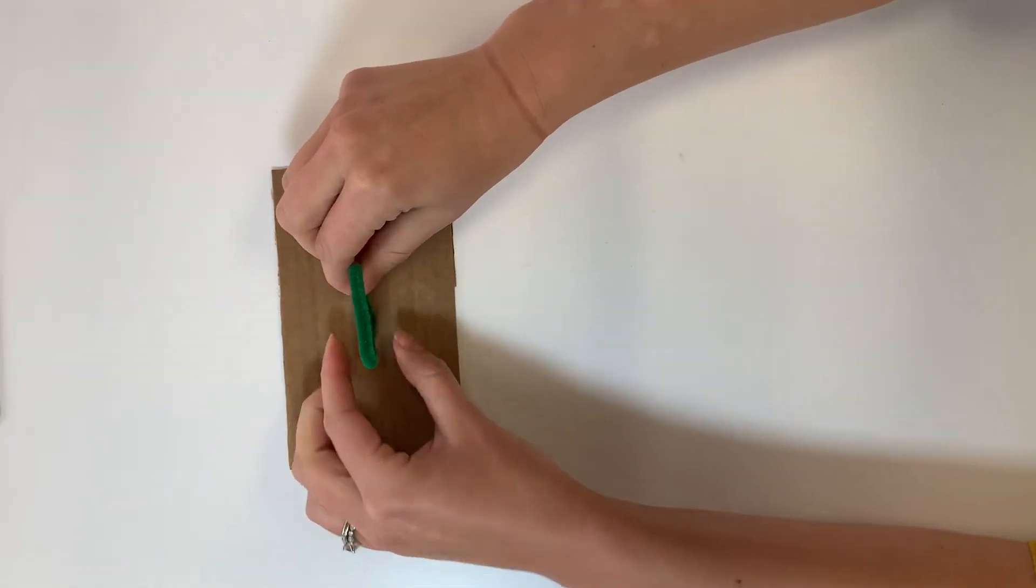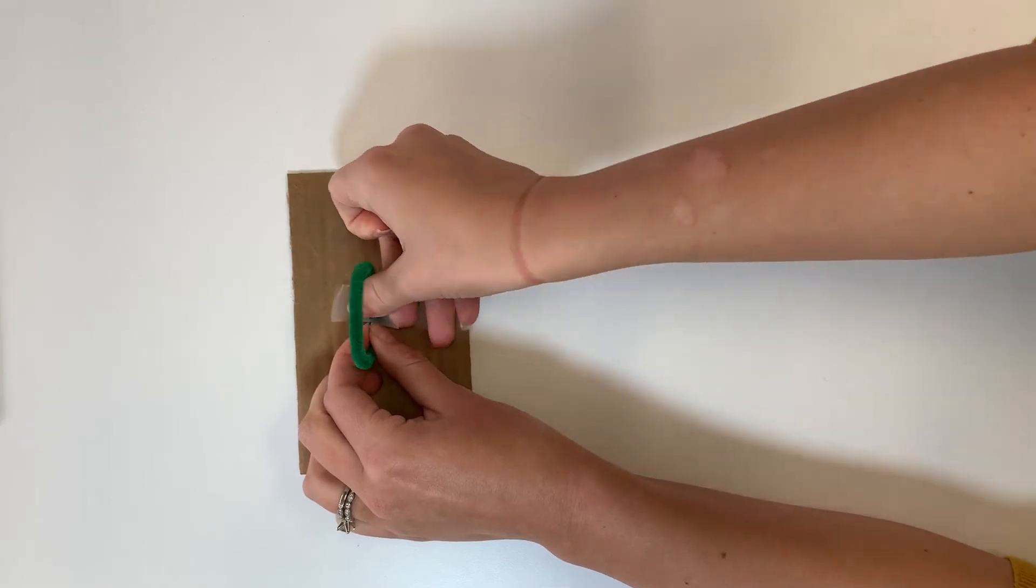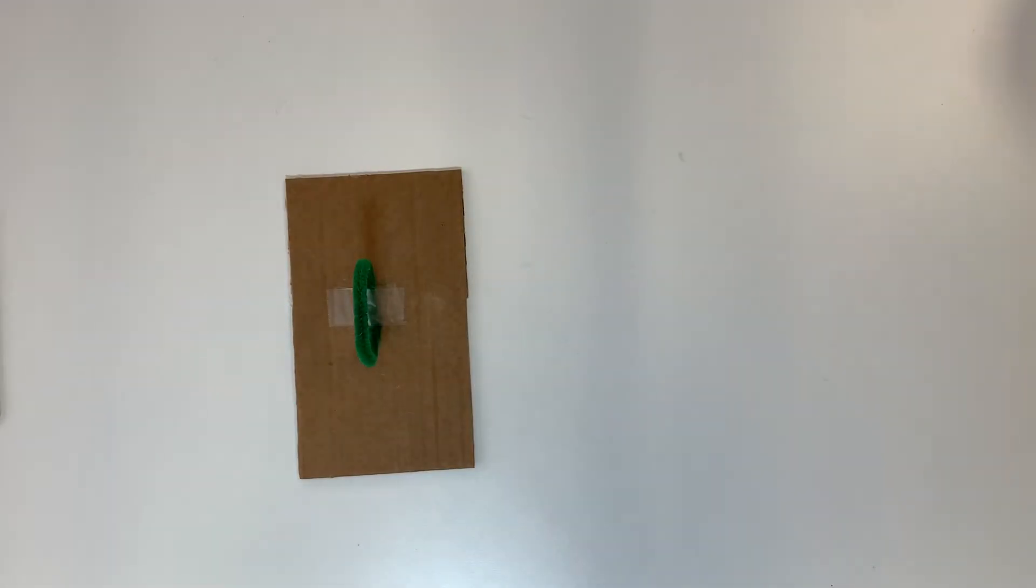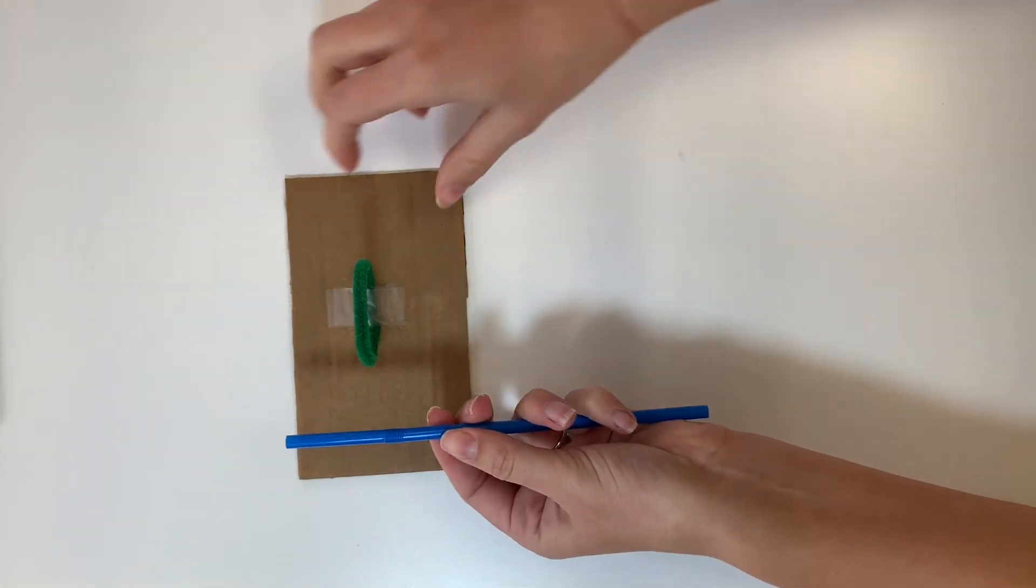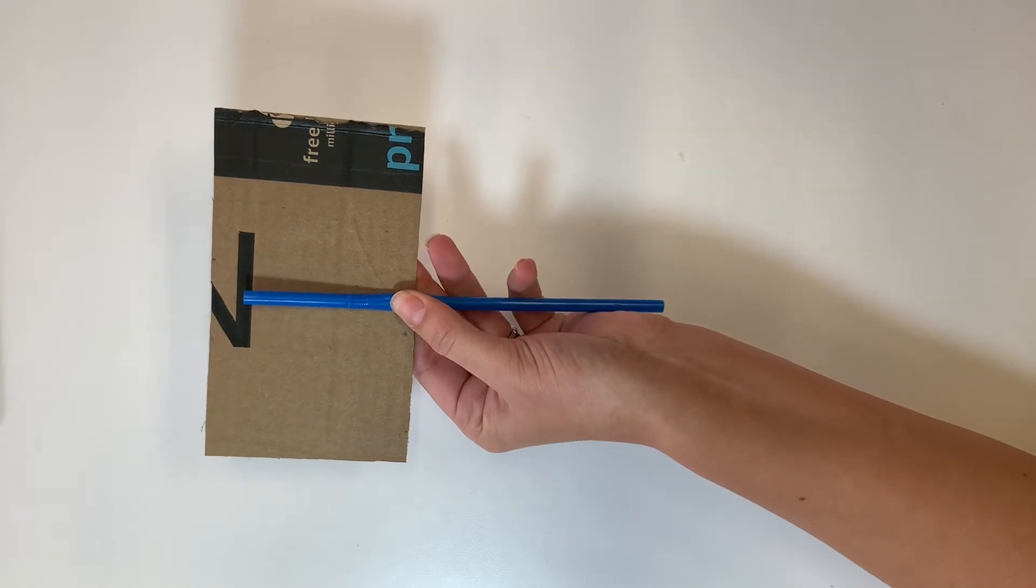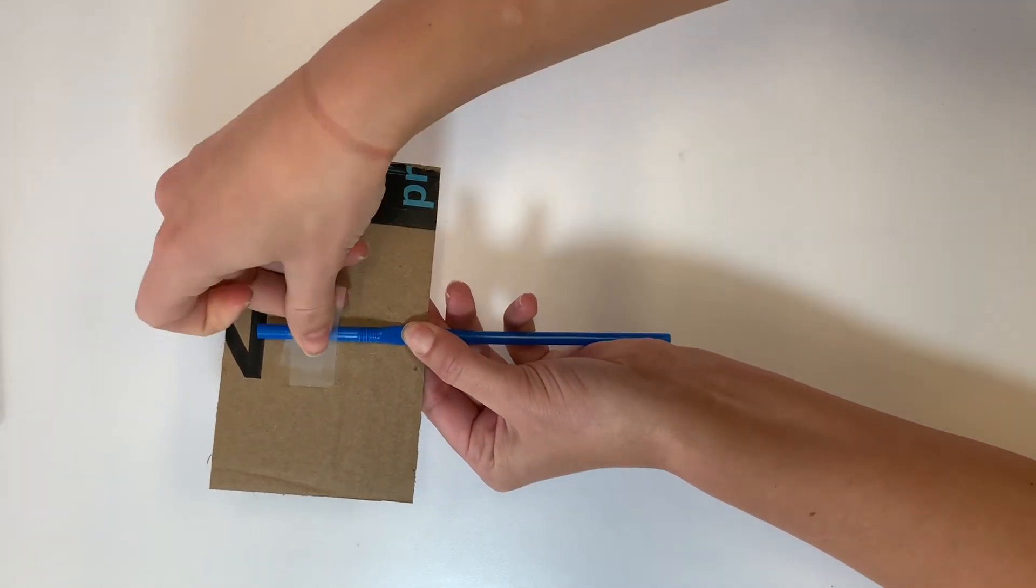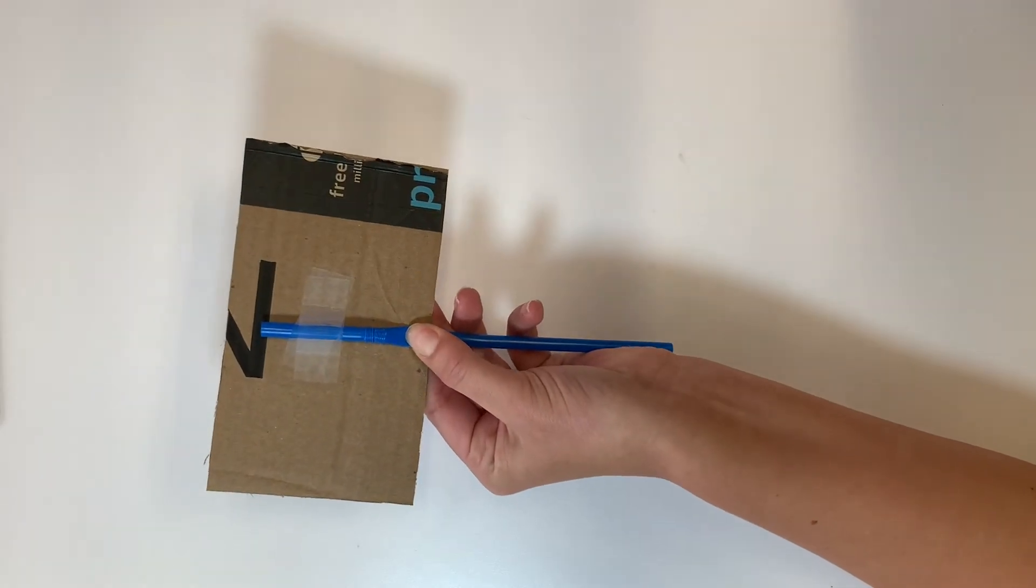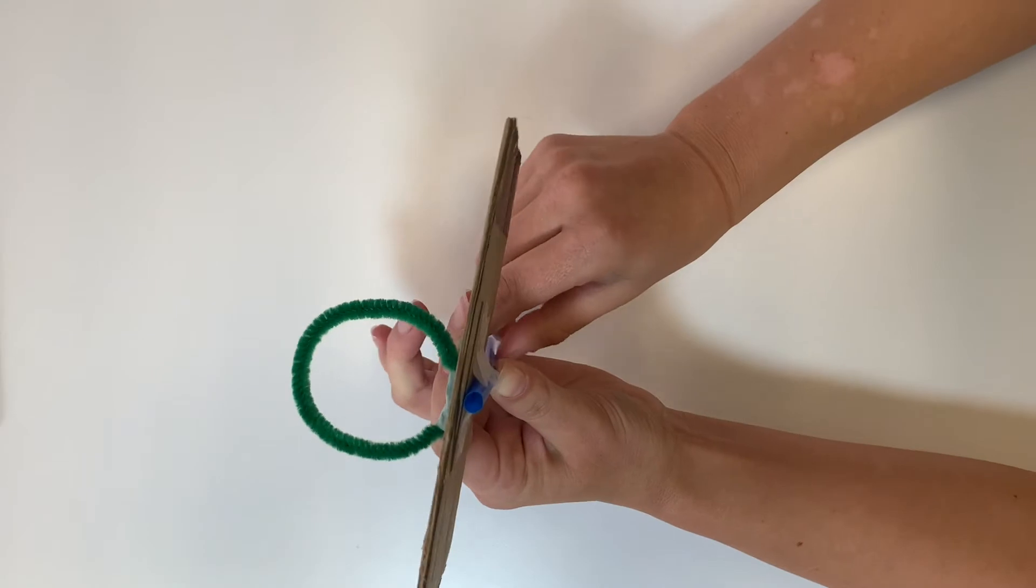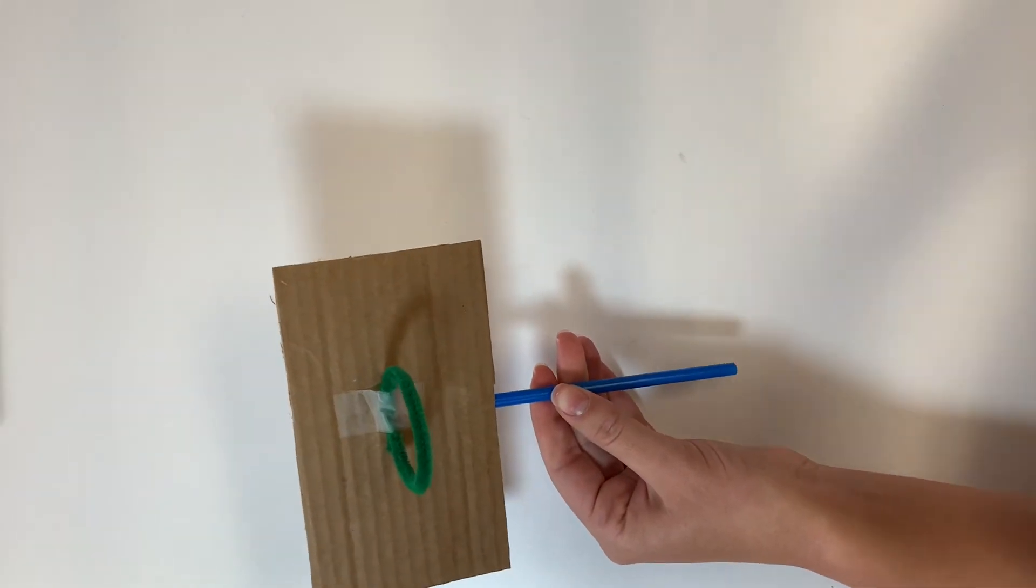Attach the pipe cleaner hoop with tape to the cardboard to make the backboard. Take a straw and attach it with tape to the back of the backboard to form the post of the basketball hoop.